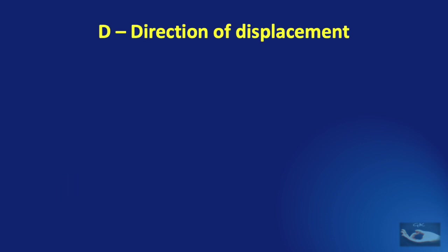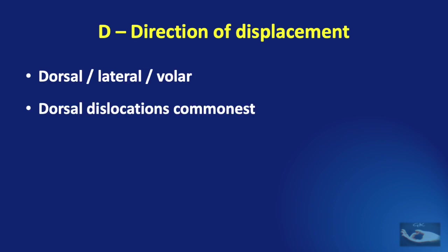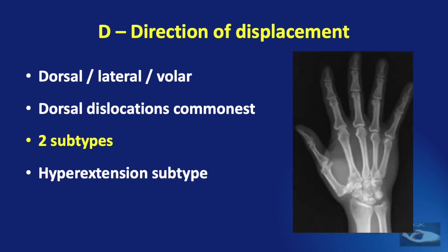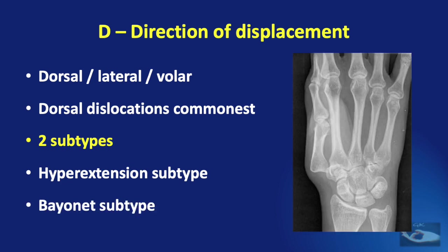The direction of dislocation may be dorsal, lateral, or volar, but dorsal dislocations are the commonest and have two subtypes. The hyperextension subtype is where the volar base of the metacarpal catches on the dorsal edge of the trapezium in an extended position. The bayonet subtype is where the metacarpal base is displaced on top of the distal trapezium in a position parallel to its longitudinal axis.